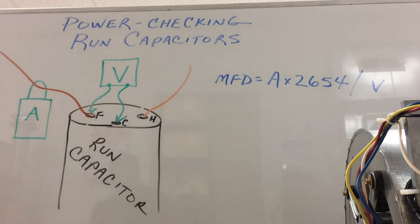And when I'm checking the fan side of that capacitor, I'm going to measure the voltage between common and fan terminals, and then I'm going to measure the amps of the fan wire when I want to check the compressor side of that dual capacitor. Then I'm going to check the voltage between the common and herm terminal and check the amps of the herm or compressor wire.